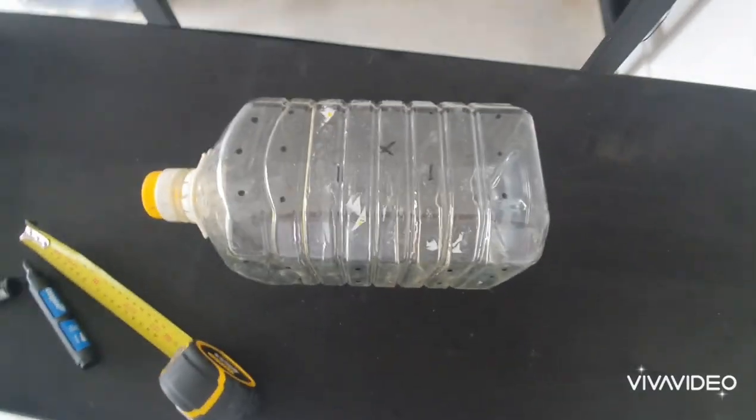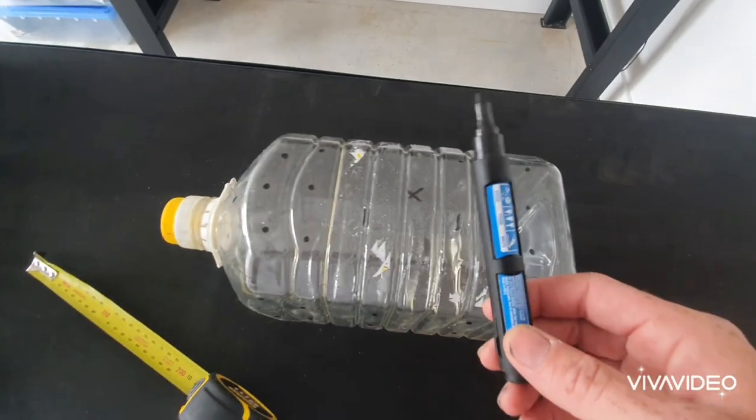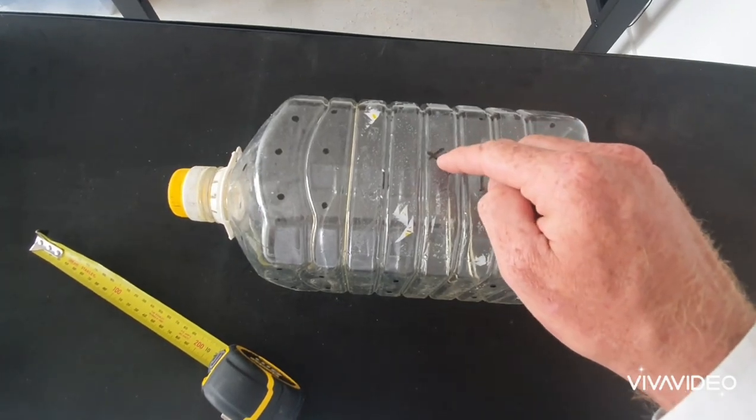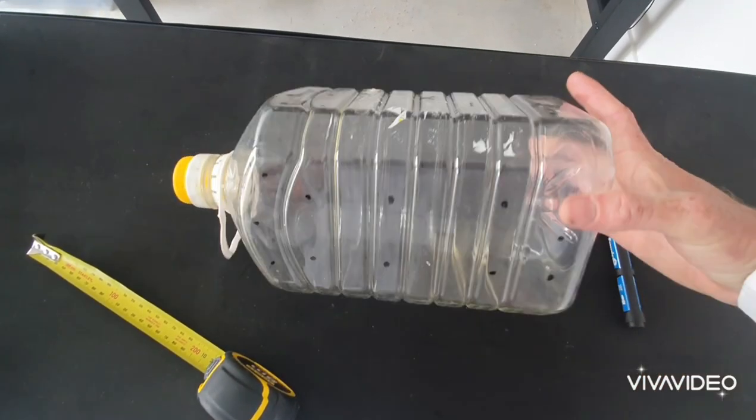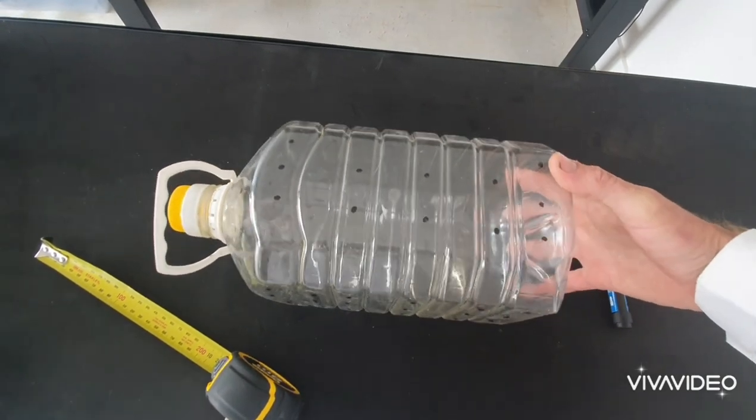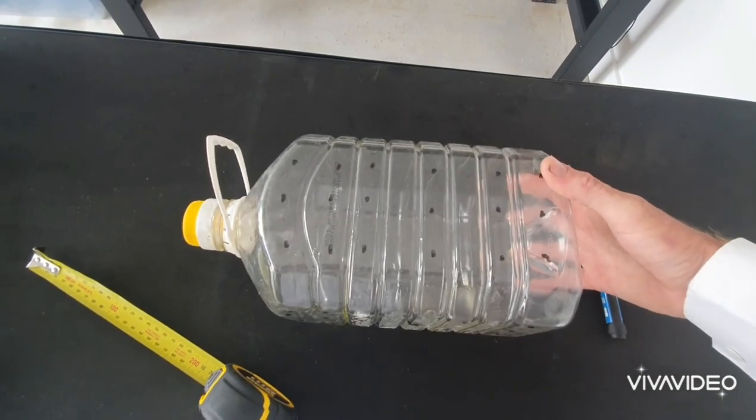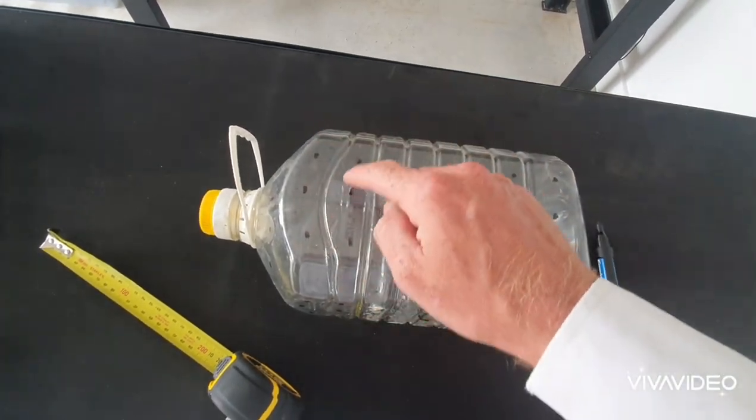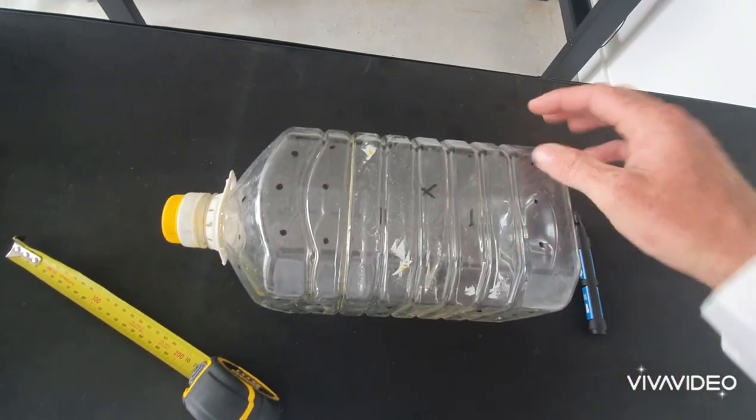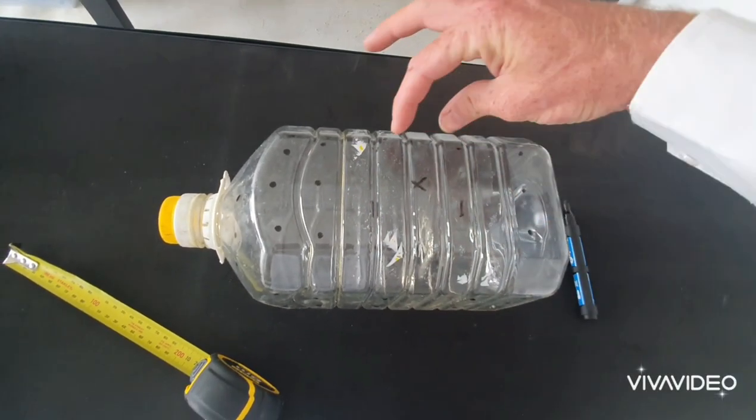What you'll notice on this bottle is that with a black marker pen, I've marked dots and crosses throughout the whole bottle. You might be asking why I've done that. I'm going to drill holes exactly where these dots are.